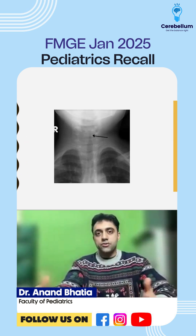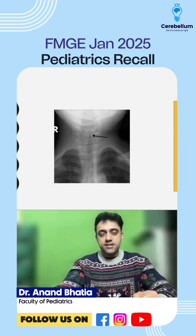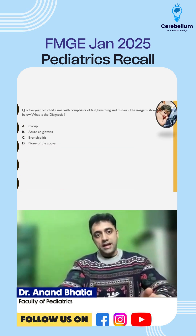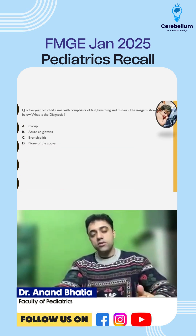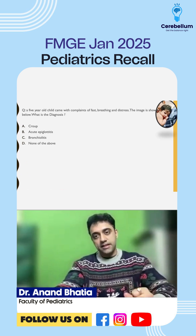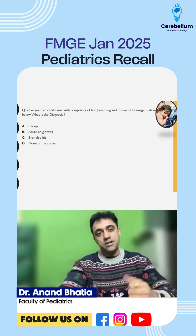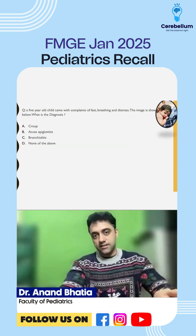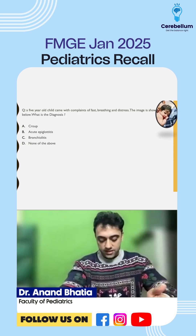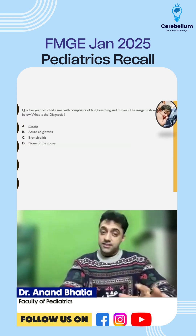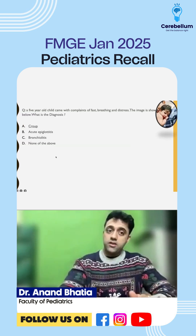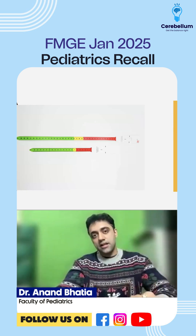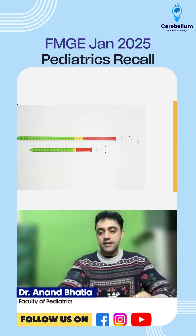The next question was regarding the stipple sign, which is seen in a case of croup. A five-year-old child came with complaints of fast breathing and distress, the image is shown — the answer for this condition is croup. These are recall questions, and one question had come regarding the Shakir tape.